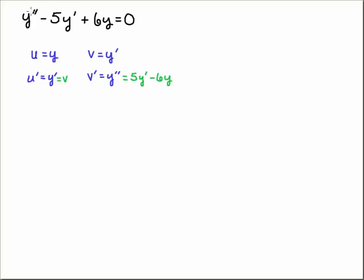So if we solve for y-double-prime by moving the minus 5y-prime plus 6y over to the right-hand side, we'll get a 5y-prime minus 6y on the right-hand side. So now you have that v-prime is equal to 5y-prime minus 6y.